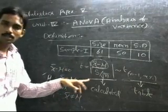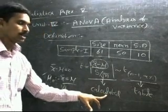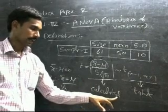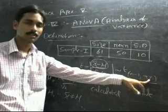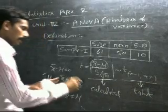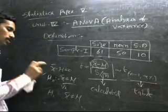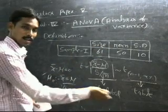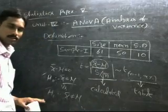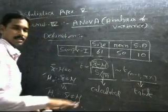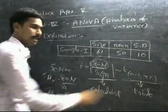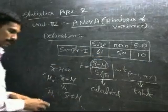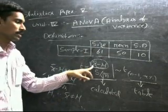Finally we have conclusions. If the calculated value is less than the table value at alpha percent level of significance and n-1 degrees of freedom, we accept the null hypothesis — meaning there is no significant difference between sample and population. If the calculated value is greater than the table value, we accept the alternative hypothesis — meaning there is some significant difference.